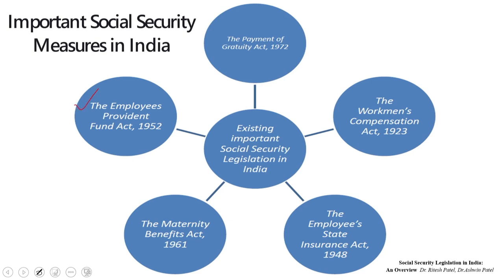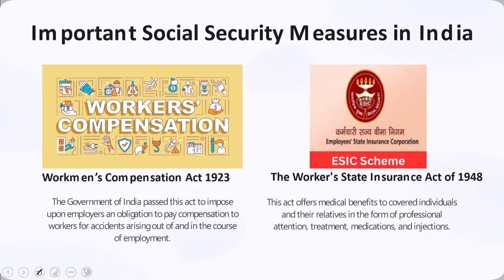With that historical background, we can appreciate the existing important social security legislations in India. These include the Employees Provident Fund Act 1952, the Payment of Gratuity Act 1972, the Workman's Compensation Act 1923, the Employees State Insurance Act 1948, and the Maternity Benefits Act 1961.